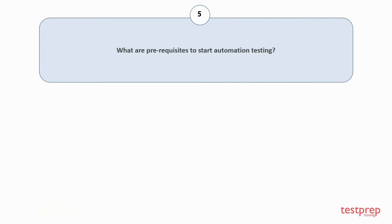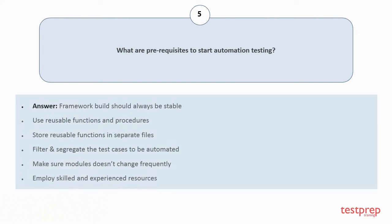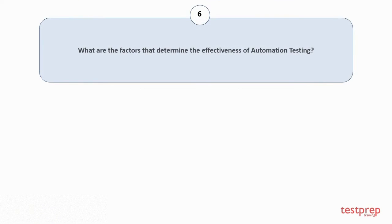Question number five: What are prerequisites to start automation testing? One, the framework build should always be stable. Two, use reusable functions and procedures. Three, store reusable functions in separate files. Four, filter and segregate the test cases to be automated. Five, make sure modules don't change frequently. Six, employ skilled and experienced resources.